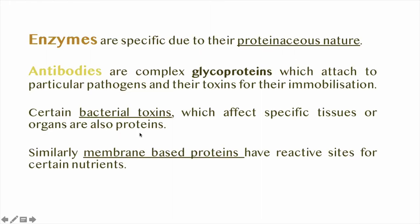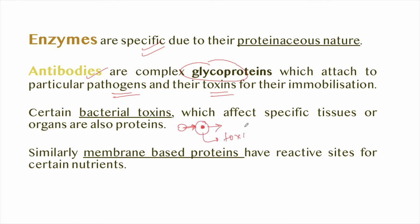For example, enzymes are specific due to their proteinaceous nature. Antibodies are complex glycoproteins which attach to particular pathogens and their toxins for their immobilization. Certain bacterial toxins are also proteinaceous in nature — they affect specific tissues and organs. Membrane-based proteins have reactive sites for certain nutrients.